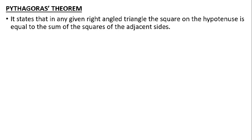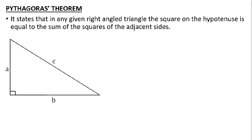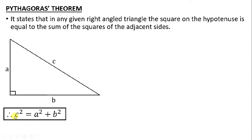What is the Pythagoras theorem? It states that in any given right angle triangle, the square on the hypotenuse is equal to the sum of the squares of the adjacent sides. When you are given a right angle triangle it has a 90 degrees. The opposite side is known as the hypotenuse and it is the longest side. The lines next to the 90 degrees are the adjacent sides — the word adjacent means next, so those are next to the 90 degrees.